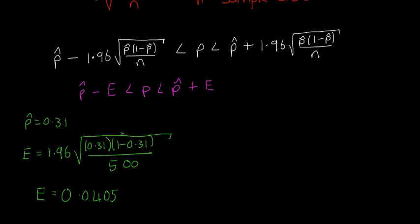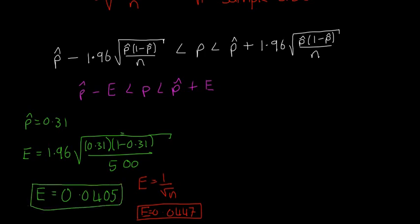If we found our, I'll do it in red here, the last time when we said that E is simply equal to 1 over root n, we found that E is equal to 0.0447, so this one is more accurate, this one in the green, because we used the more complicated formula.